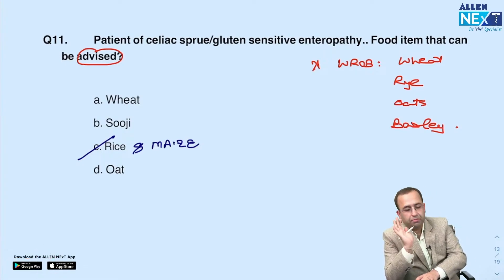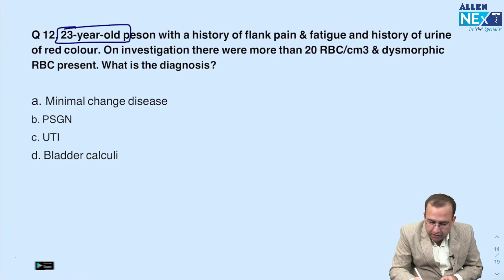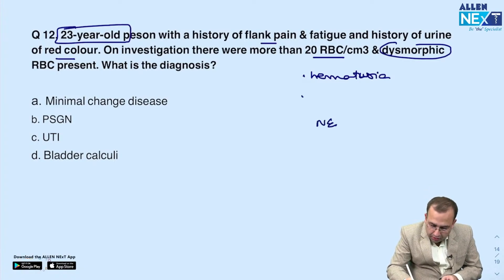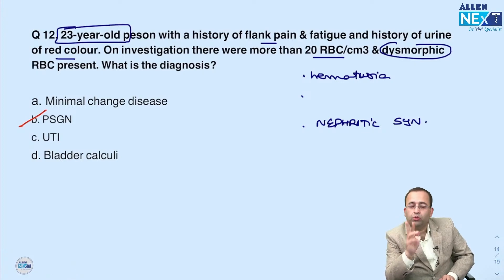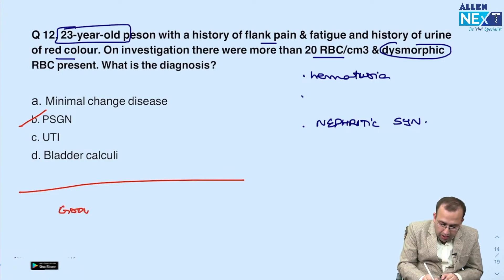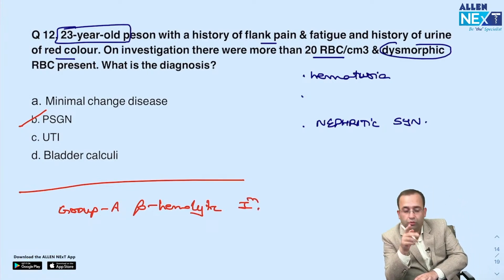A young male with history of flank pain, fatigue, and red-colored urine with hematuria — presence of dysmorphic RBCs means this is a case of nephritic syndrome. In a young individual, the diagnosis is PSGN — post-streptococcal glomerulonephritis. There were two questions on PSGN: one on nephritic syndrome, and one confirming it occurs after group A beta-hemolytic streptococcal infection.